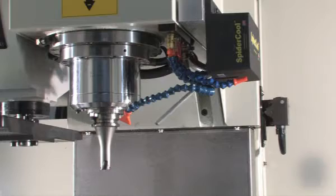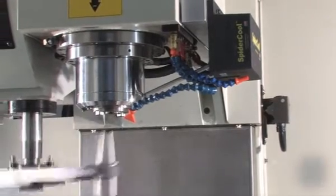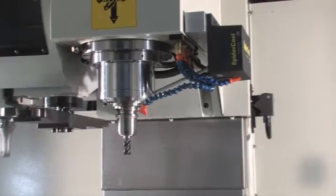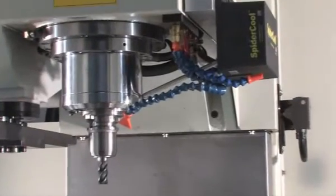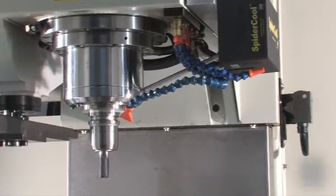The nozzle clears the spindle area for tool changes and then is automatically redirected for the tool in the spindle whenever the AccuLube is turned on again.